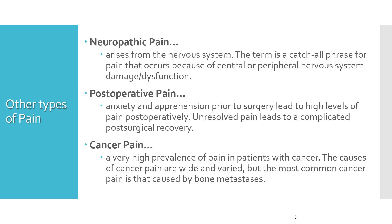Some other types of pain important in clinical practice are neuropathic pain, post-operative pain, and cancer pain. Neuropathic pain basically arises from the nervous system itself — it is a catch-all phrase for pain that occurs because of central or peripheral nervous system damage or dysfunction. Post-operative pain is the pain that occurs after surgery. Anxiety and apprehension prior to surgery lead to higher levels of post-operative pain. A good explanation to the patient about the surgical procedure, what to expect, and allaying their fears and anxiety helps in reducing post-operative pain. Unresolved pain can lead to a complicated post-surgical recovery.